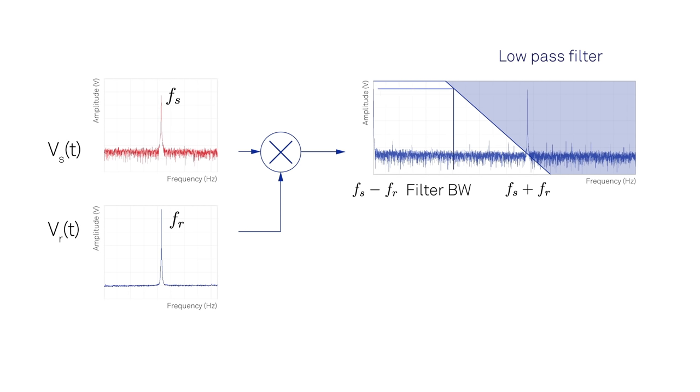The filter bandwidth, or the minus 3 dB point, is the cutoff frequency where signal power is attenuated by half. This bandwidth is inversely proportional to the time constant.